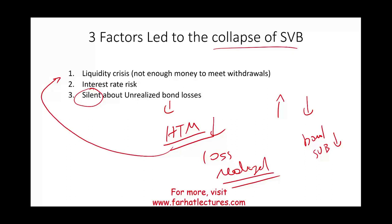Simply put, the losses were large enough that the bank could not meet its liquidity crisis. You can view the prior recording on the SVB collapse from an accounting perspective to understand this more fully from that angle.